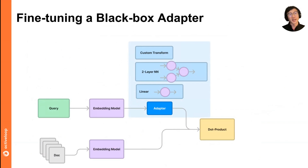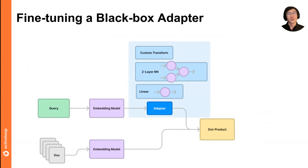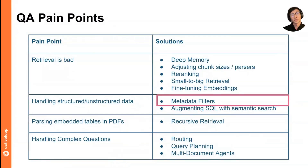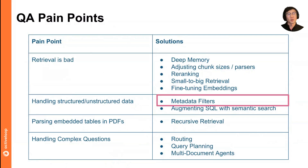This allows you to create a transformation layer on top of your embeddings to better adapt them towards your data representation and the types of questions you want to ask. It generally tends to squeeze out a few percentage points of better performance. The diagram shows how to fine-tune a black-box adapter: given a question and a fixed embedding model — even OpenAI — you fine-tune a transformation from the generated embeddings, either a linear transformation or a deep neural net layer, and apply that at production time to transform your embeddings into something more amenable for retrieval.